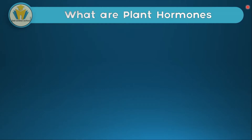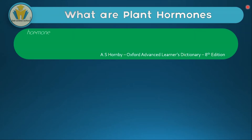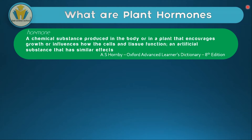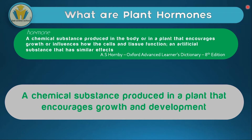We are going to start with looking at what a plant hormone is. Auxins are plant hormones, so to get a better understanding of auxins it's best we look at what a plant hormone is first. If we look at the definition of a hormone in the dictionary, we'll have a better picture. The definition says: a hormone is a chemical substance produced in the body or in a plant that encourages growth or influences how the cells and tissue function, or an artificial substance that has similar effects. We can summarize that a plant hormone is just a chemical substance.